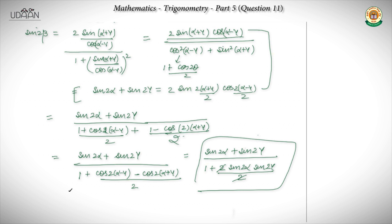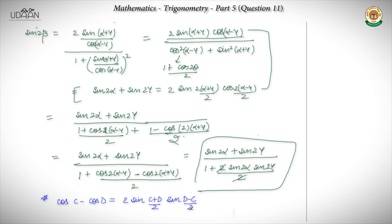In this question, we were given in terms of tan β and had to prove in terms of sin 2β. You may note there are multiple formulas — sin 2β equals 2 sin β cos β, or also equals 2 tan β upon 1 plus tan²β. But since tan β was given, it makes logical sense to use the tan β form of sin 2β. That's why we used that formula.